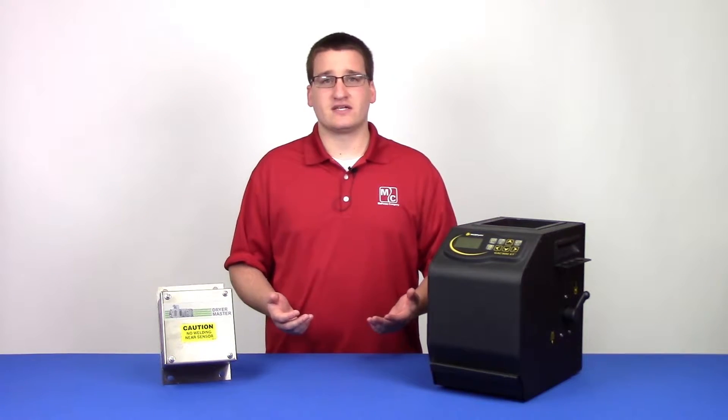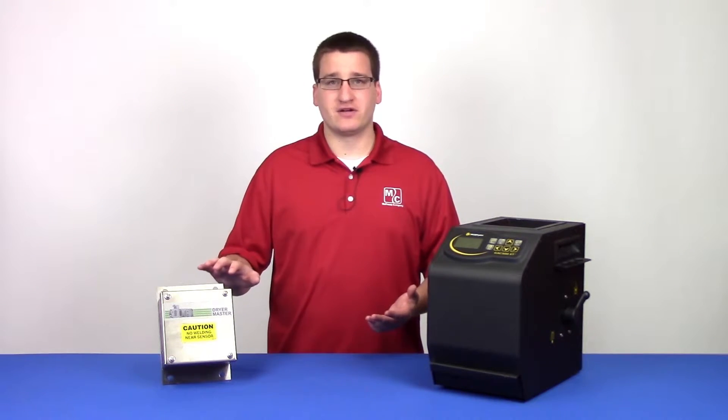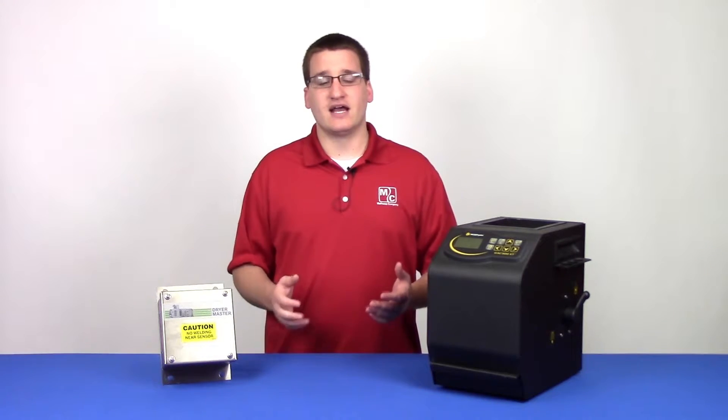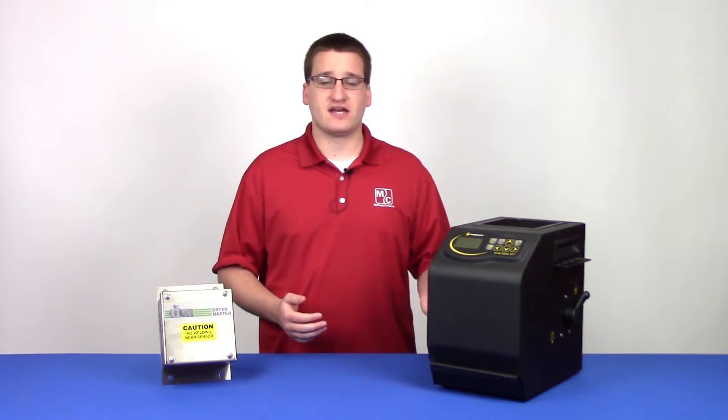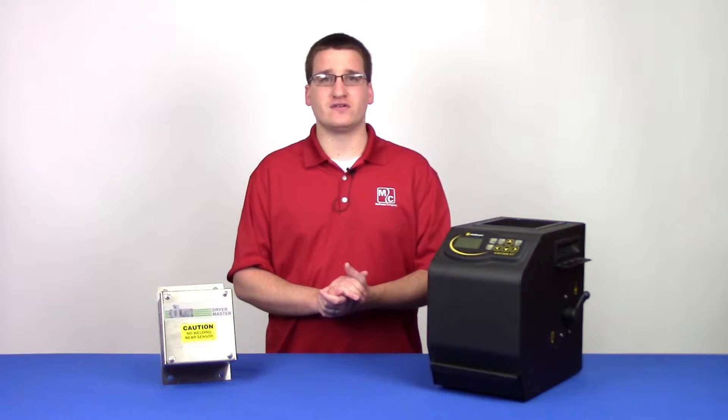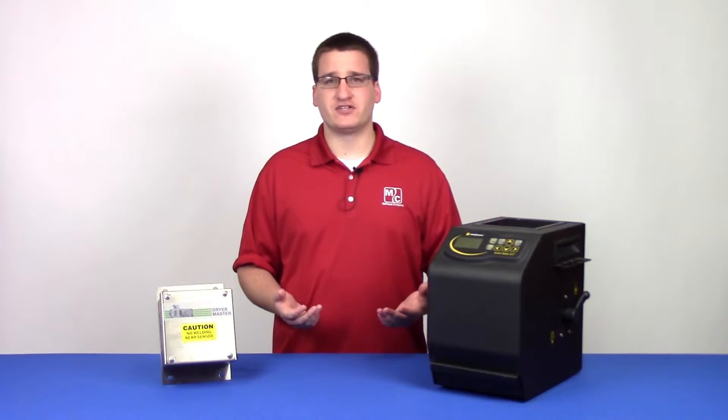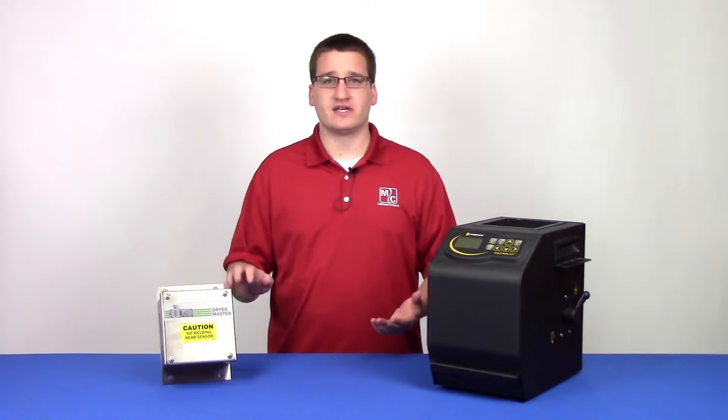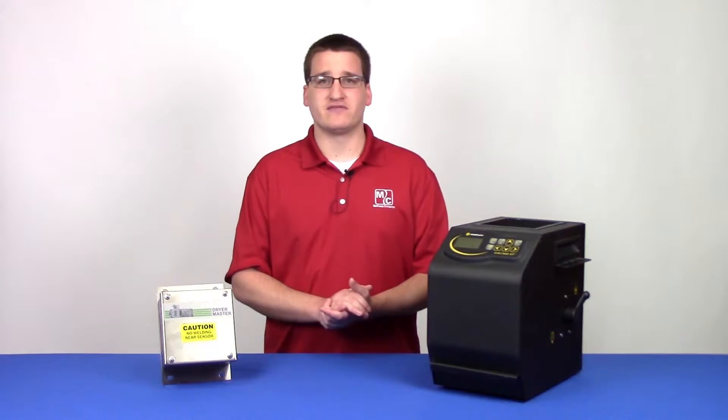During the calibration process, a sample of grain will be monitored by the sensor on the dryer, and then that same sample will be checked on a third-party tester to compare results. This process of ensuring that the sensor is reading accurately is vital for the efficient operation of a grain dryer.